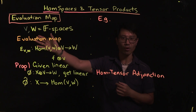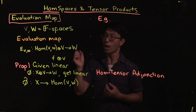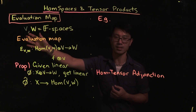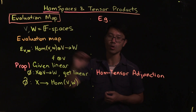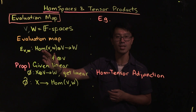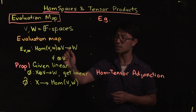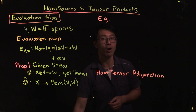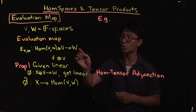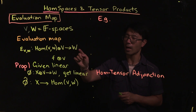So what we're going to start off with is a certain evaluation map, and it's going to generalize the natural contraction map that we saw between a vector space and its dual. So what we're going to start with are two vector spaces, V and W, over this field F. The evaluation map is the following one. We're going to have two vector spaces: the first one is the vector space of linear maps from V to W, Hom(V,W), and the second vector space is V. So we can take the tensor product of these two vector spaces, and then we're going to map this over to W.